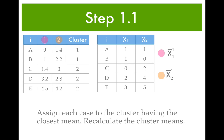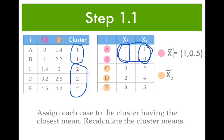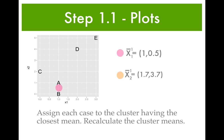At this point we've got A and B in cluster 1, and C, D, and E in cluster 2. Now we need to recalculate the cluster means. The mean for cluster 1 will be the mean of A and B, giving us a mean of 1 and 0.5. Then we calculate the mean of C, D, and E, which gives us the mean for cluster 2.